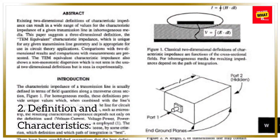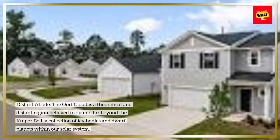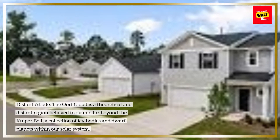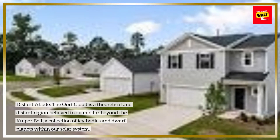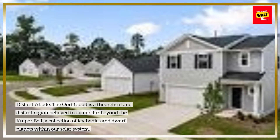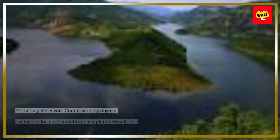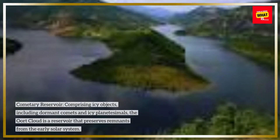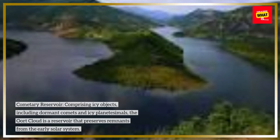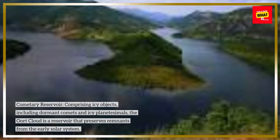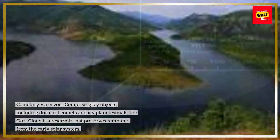Definition and Characteristics. Distant Abode: The Oort Cloud is a theoretical and distant region believed to extend far beyond the Kuiper Belt, a collection of icy bodies and dwarf planets within our solar system. Cometary Reservoir: Comprising icy objects, including dormant comets and icy planetesimals, the Oort Cloud is a reservoir that preserves remnants from the early solar system.